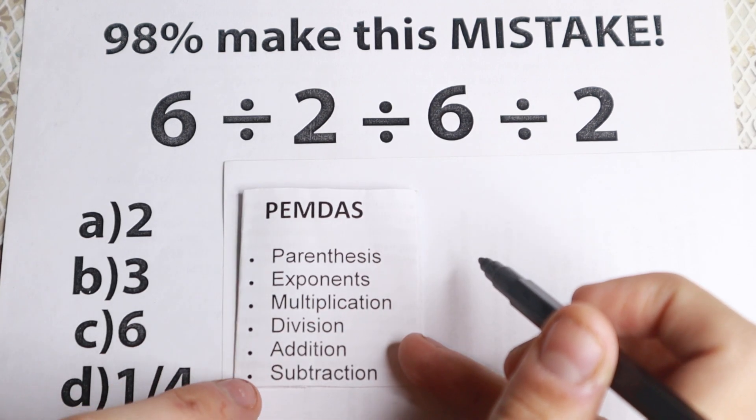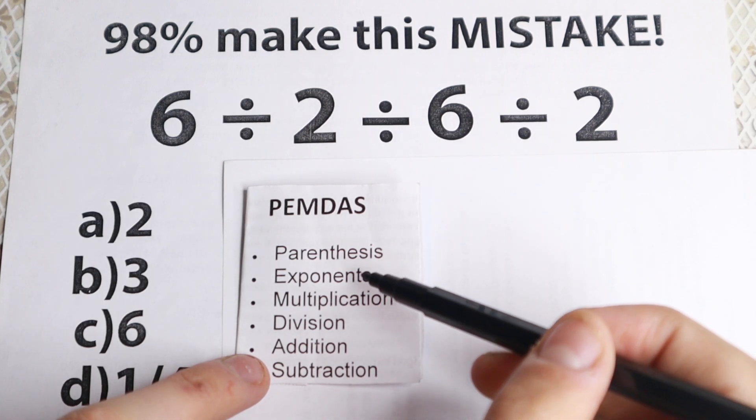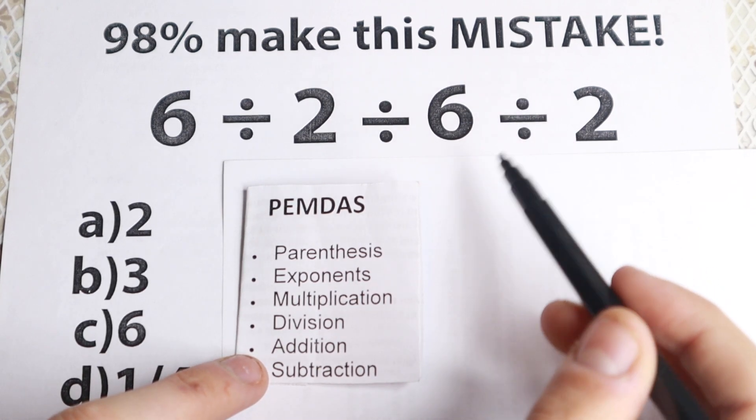Let's start with parentheses. So do we have parentheses? No, I don't see any parentheses right here. Let's go with exponents. So we don't have any exponents, we don't have any squares, we don't have any cubes right here.